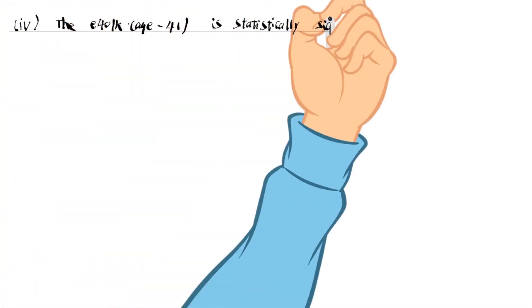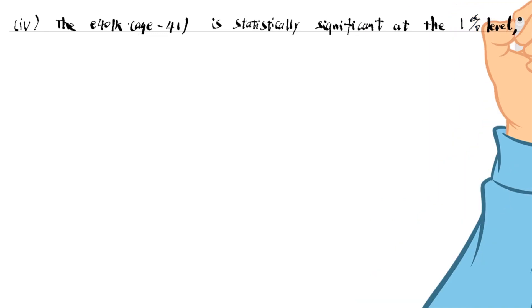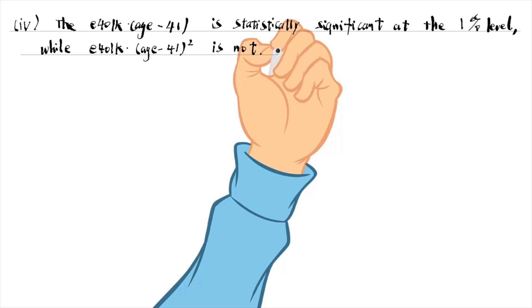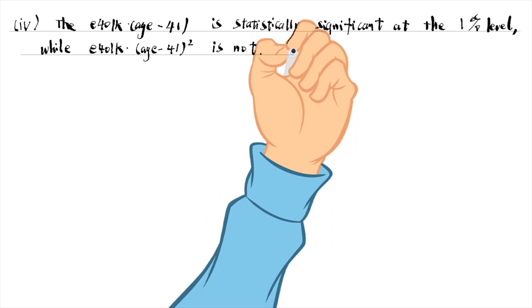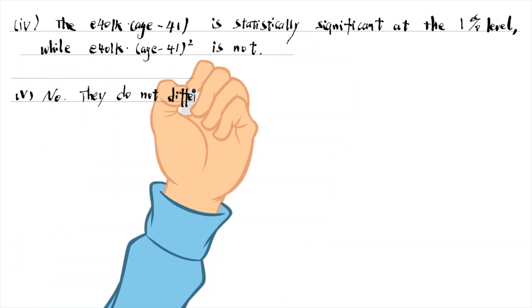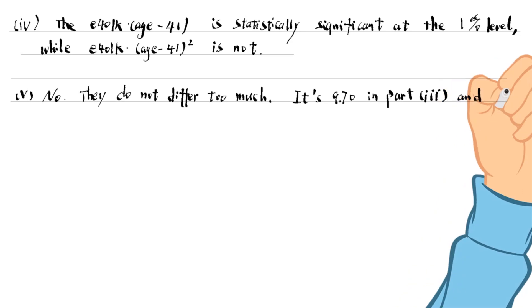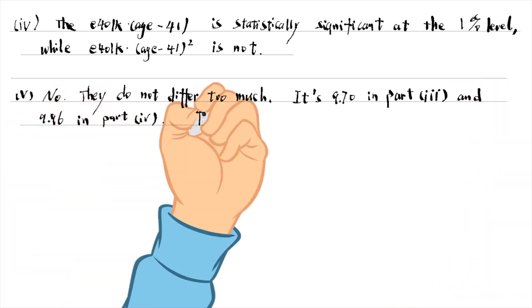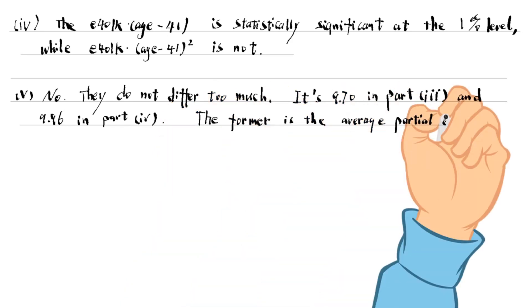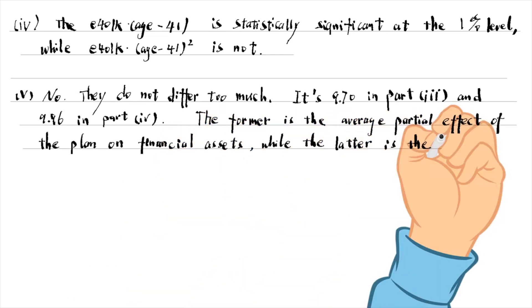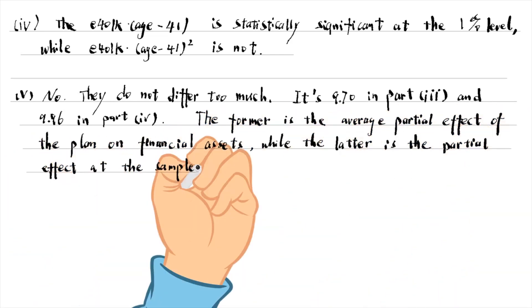In part 4, the interaction term between the plan and age is statistically significant, while the interaction term involving the squared age is not. My answer to question 5 is no, they do not differ too much. It is 9,705 in part 3 and 9,960 in part 4. The former is the average partial effect of the plan on financial assets, while the latter is the partial effect at the sample mean of age. They are similar.